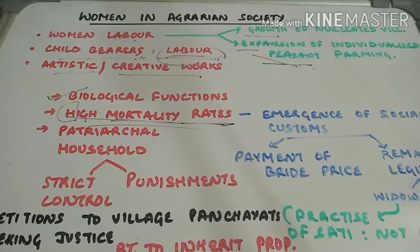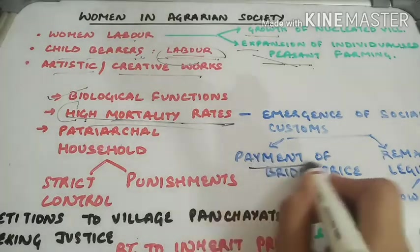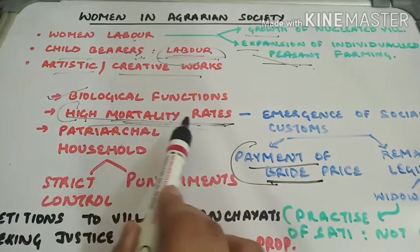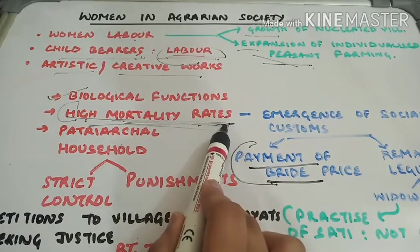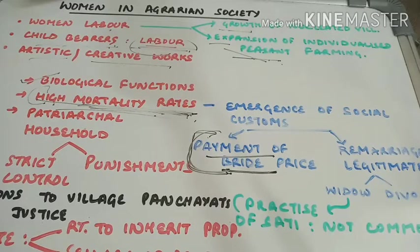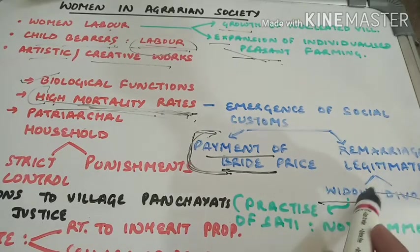Because of the high death rate among women, different social customs emerged. For example, the custom of payment of bride price — the bridegroom had to pay a price to the family of the bride, basically the opposite of dowry. Because of the high mortality rate, there was a shortage of females, a shortage of wives, as a result of which such a practice emerged. Another thing was that remarriage was legitimized — widow as well as divorced women could remarry.